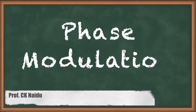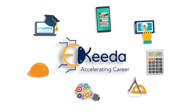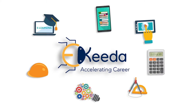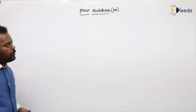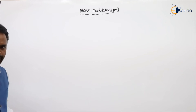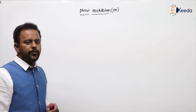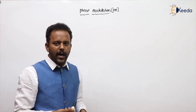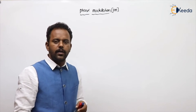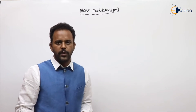Hello students, in this video we will be discussing about phase modulation. Coming to phase modulation, what is happening? The phase of the carrier is going to vary linearly in accordance to the amplitude of a message signal — that is called phase modulation.